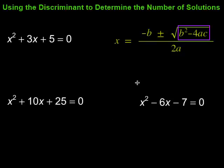The discriminant is actually in the quadratic formula. It's this piece right under the square root here. And depending on the value of that, whether it's positive, zero, or negative, that will tell us how many solutions that quadratic equation will have.